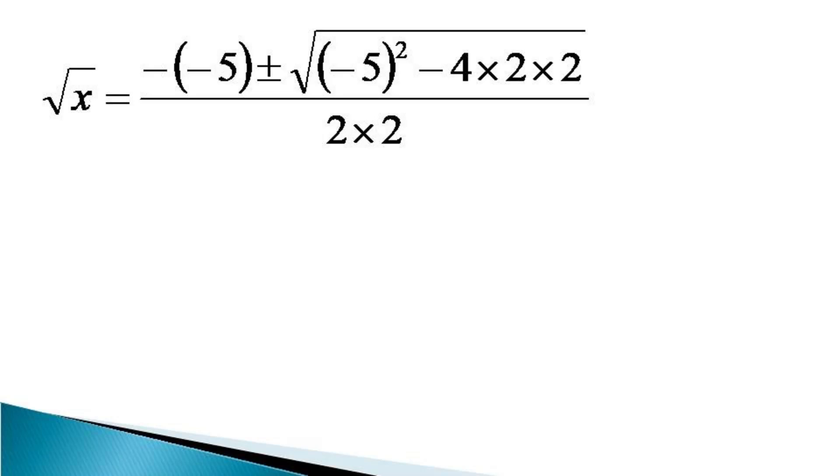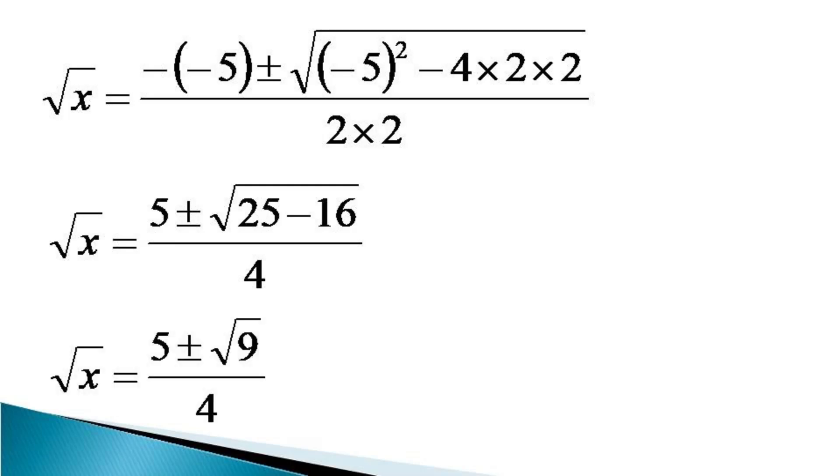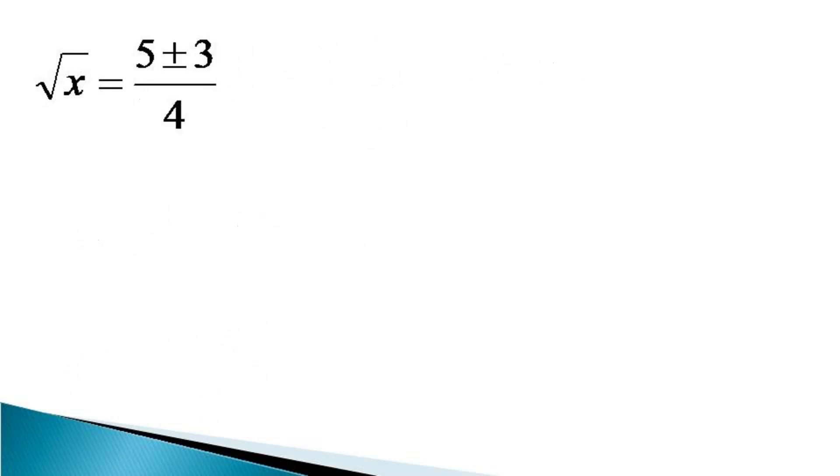This simplifies to √x equals (5 ± √(25-16))/4, which is further simplified as √x equals (5 ± √9)/4. This becomes √x equals (5 ± 3)/4, which gives us two values for √x: 2 and 1/2.